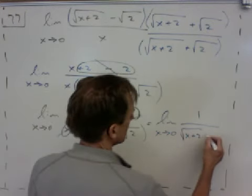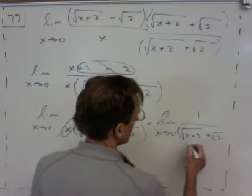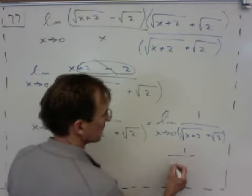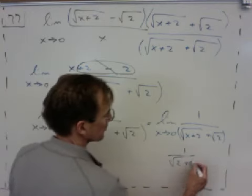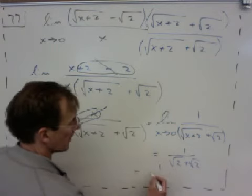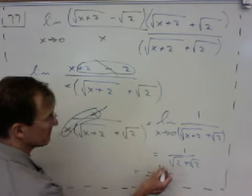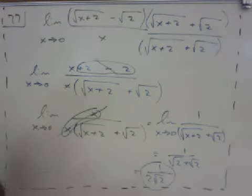So as x goes to 0, you're going to end up with 1 over root 2 plus root 2, which is going to be 1 over root 2. Okay, so that's the limit there.